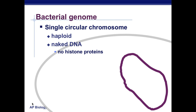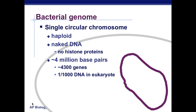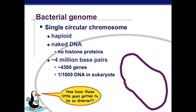It's naked DNA, so it's not wrapped around histone proteins like eukaryotes. It has about 4 million base pairs and about 4,300 genes. In comparison, it only has about one one-thousandth the DNA as eukaryotes. So how have they gotten so diverse? They've been able to get very diverse based on sharing and transferring their DNA, which is what we're going to talk about.